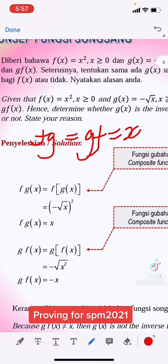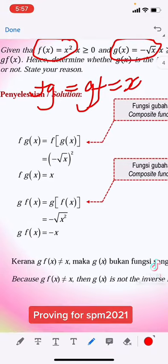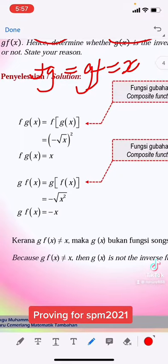g is inverse to f. So let's say we have this function f(x) equal to x square and g(x) is negative square root of x. So if we sub the g into f...